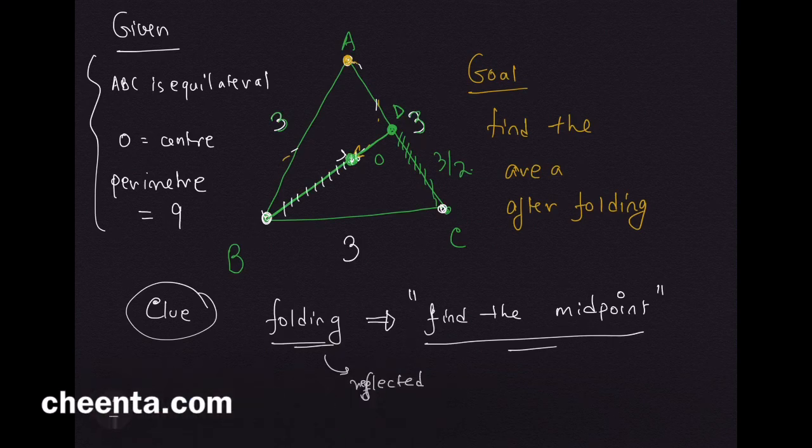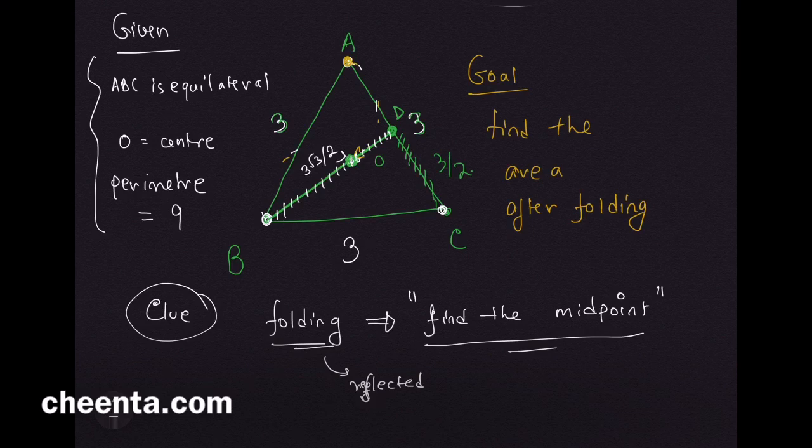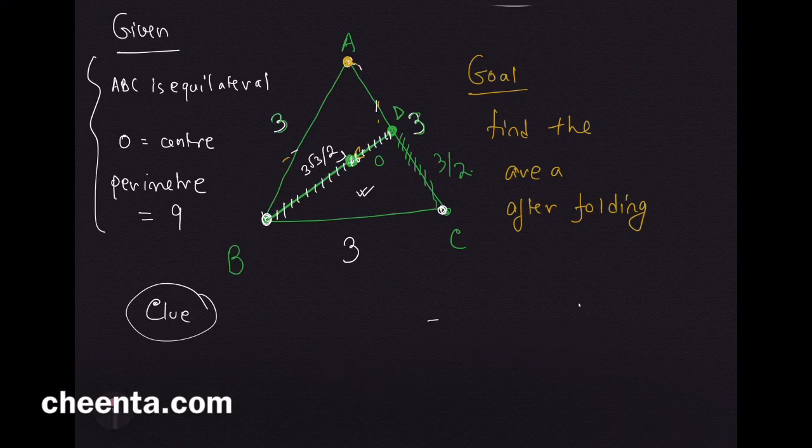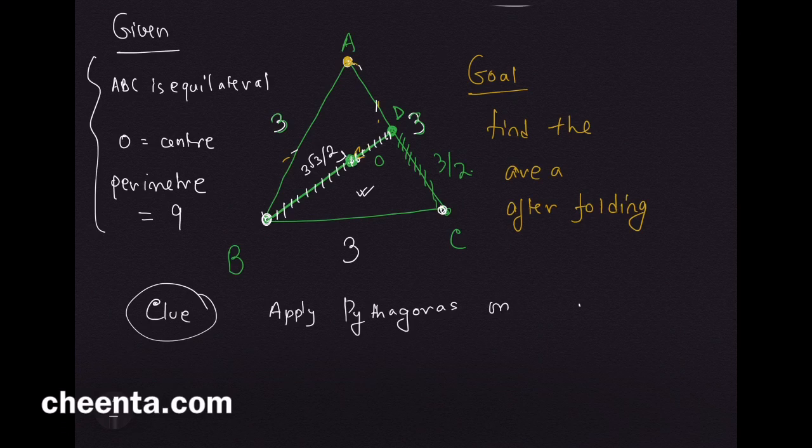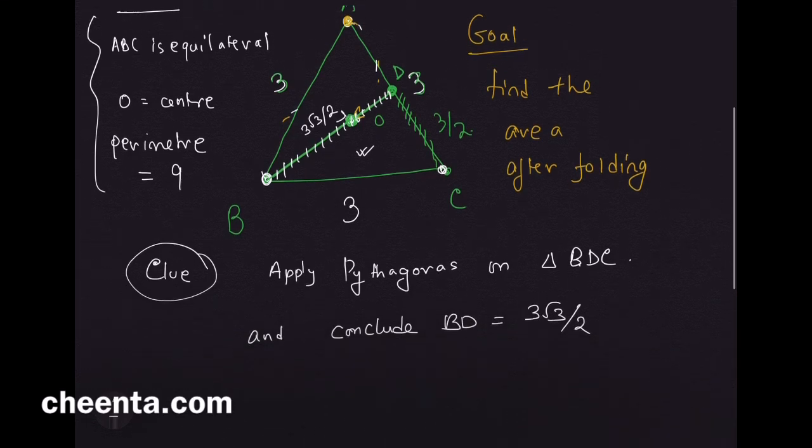The perpendicular, because the triangle is equilateral, is 3√3/2, the length of the perpendicular. It's a very easy application of Pythagorean theorem on this triangle. Apply Pythagorean theorem on triangle BDC and conclude that BD is 3√3/2.